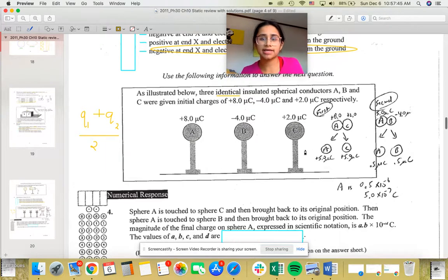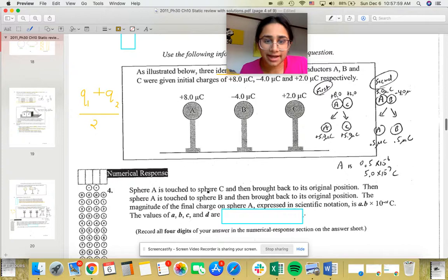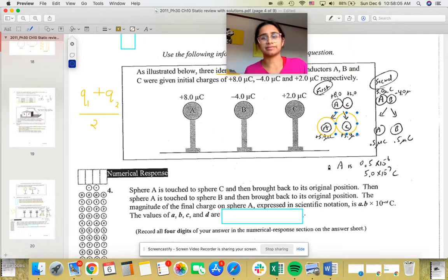So when you're bringing A to C, what you're going to have is 8 plus 2 divided by 2, which is equal to 10 divided by 2, which is equal to 5. So right now A has a charge of 5, and C also has a charge of 5, and that's in microcoulombs.